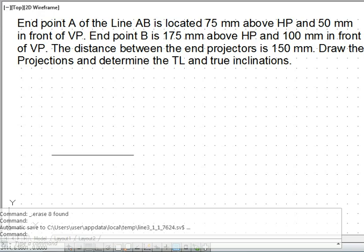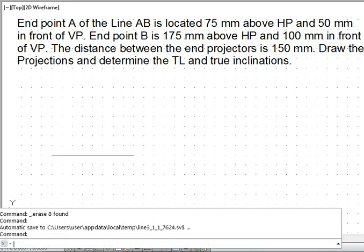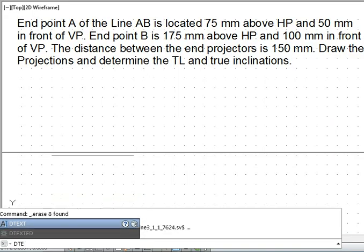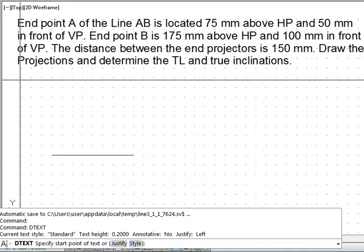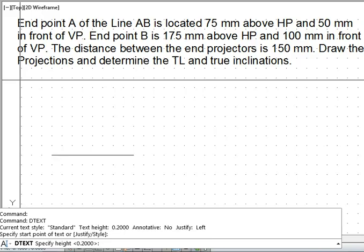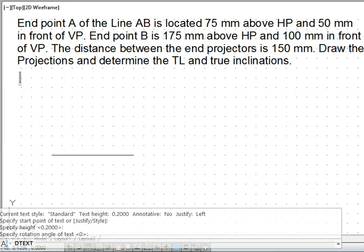We have the distance between the end projectors also given. So we initially draw or write down all the important points that we need to use. Using the D text command, the initial points we know A dash, B dash, A, B, capital A, capital B, capital A dash, capital B dash, and also B1 and B1 dash. These are general points that we need in the case of the problem in a line.